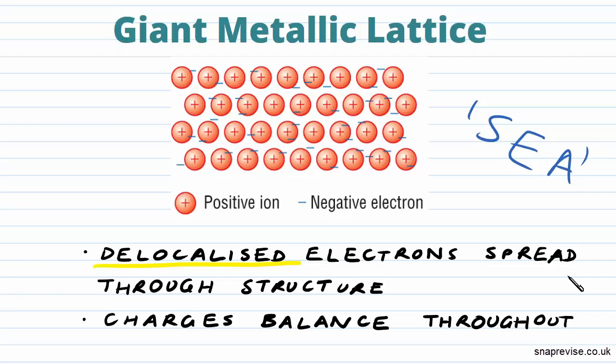That reflects the fact that the negative electrons are free to flow and move anywhere they like. However, the charges are balanced throughout the structure, so although negative electrons can move wherever they like, they will balance out the positive ions. It's these negative electrons and their delocalisation that gives metals some of their special qualities, which we'll have a look at now.